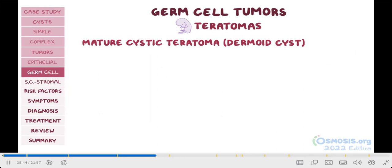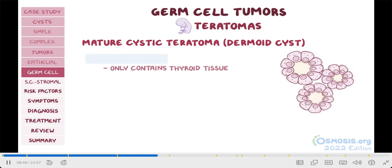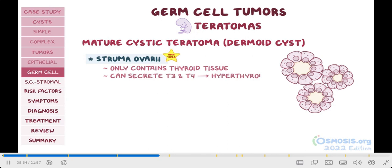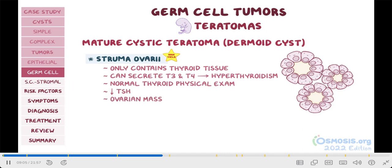A special high-yield type of mature cystic teratoma that only contains thyroid tissue is called struma ovarii. These tumors can secrete T3 and T4, leading to hyperthyroidism. So if a question asks about a female with hyperthyroidism, normal thyroid physical examination, low TSH, and an ovarian mass, think of struma ovarii.